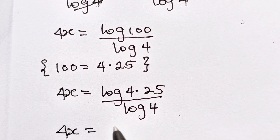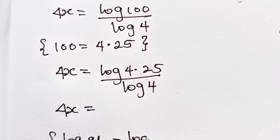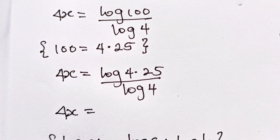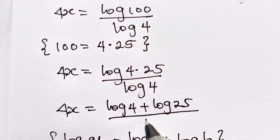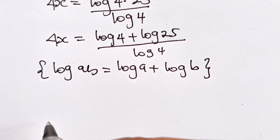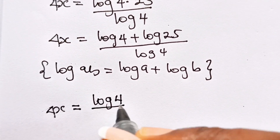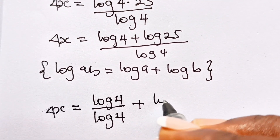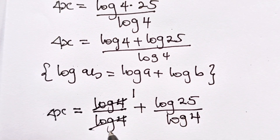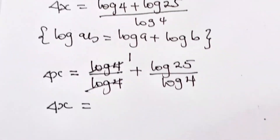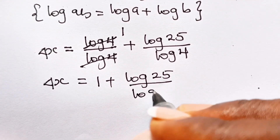We have 4x equal to — recall that log of a times b is equal to log a plus log b — so log 100 becomes log 4 plus log 25, divided by log 4. Moving forward, we have 4x equal to log 4 divided by log 4 plus log 25 divided by log 4, which simplifies to 4x equal to 1 plus log 25 divided by log 4.